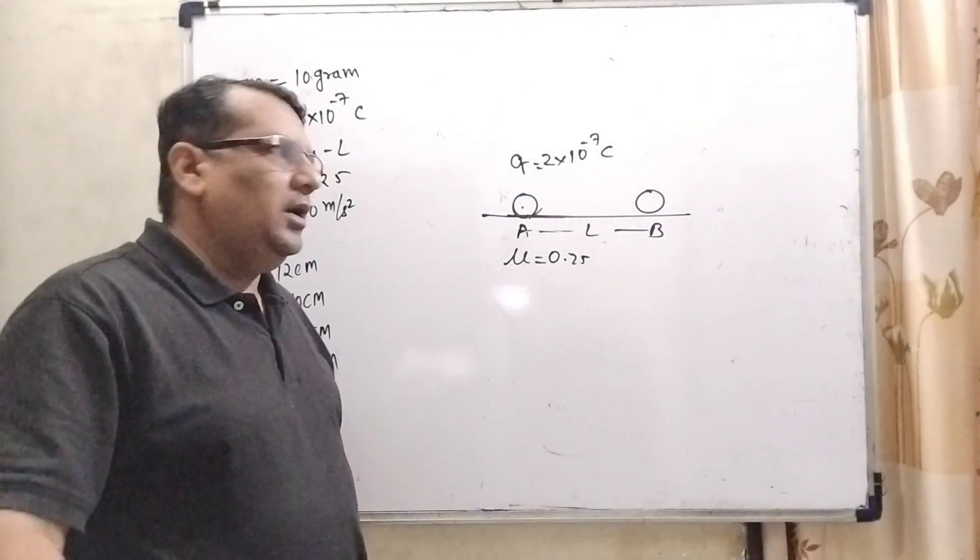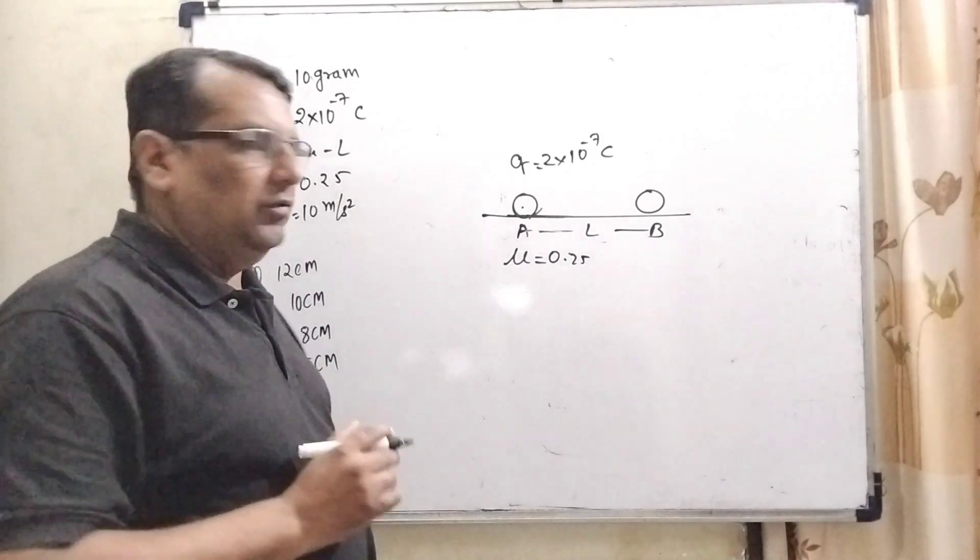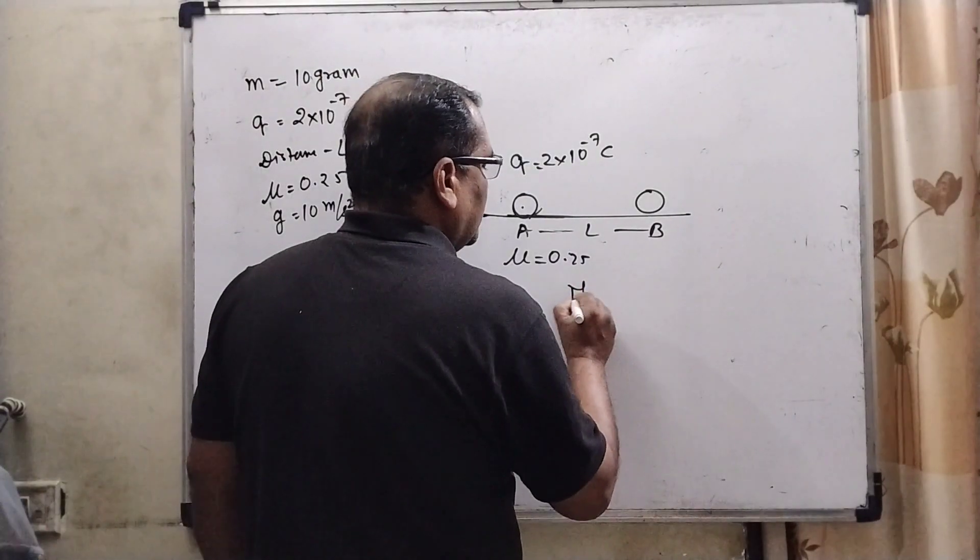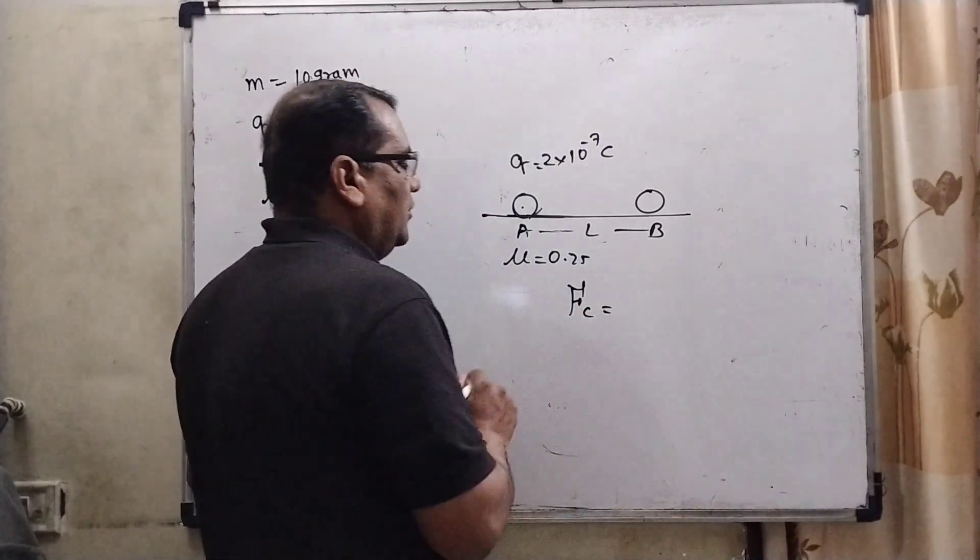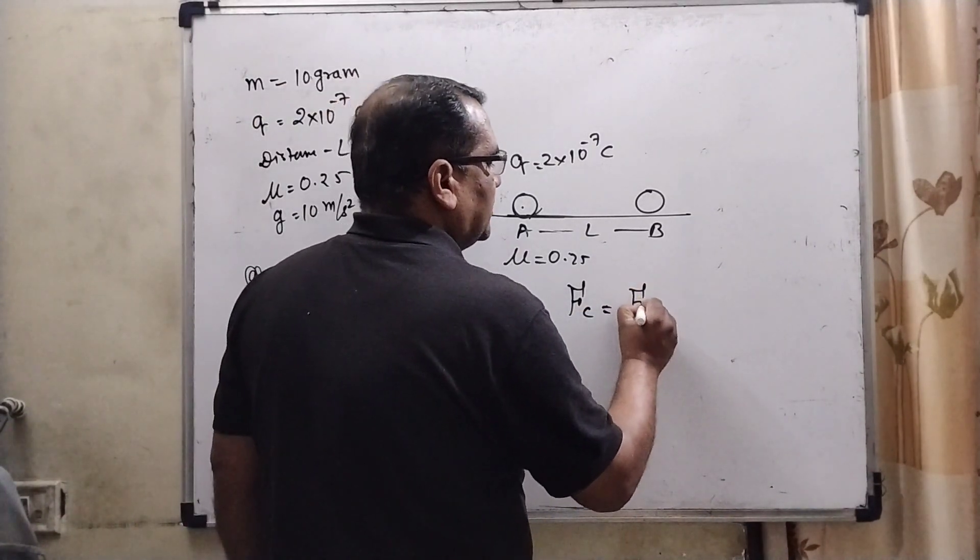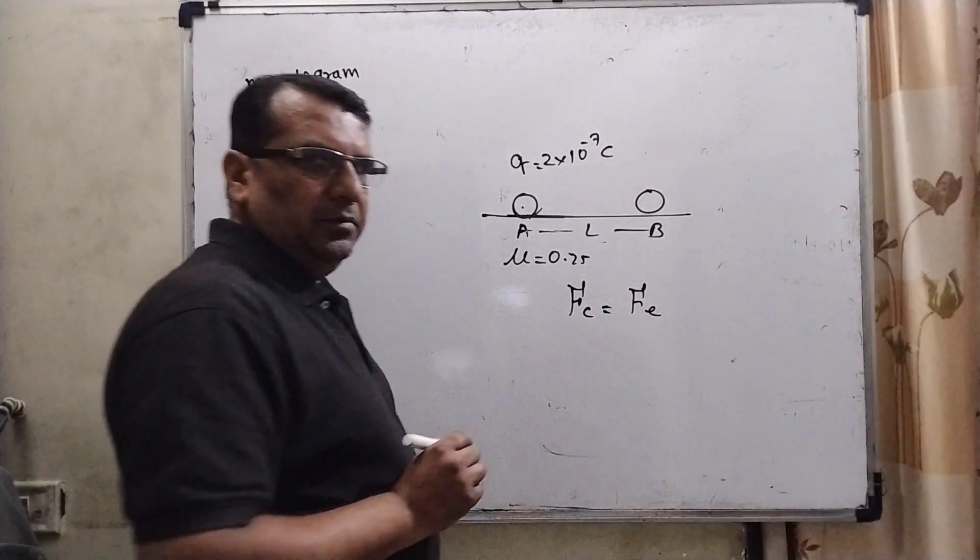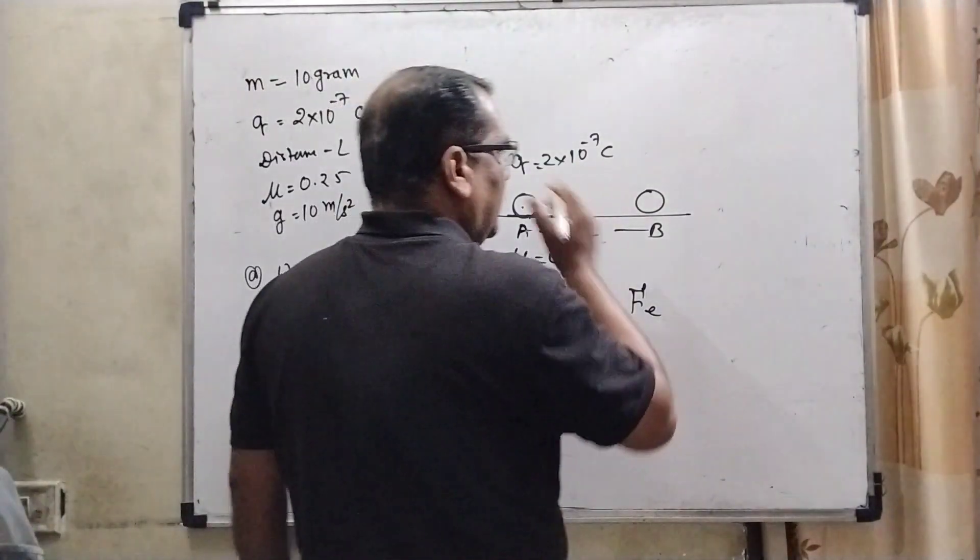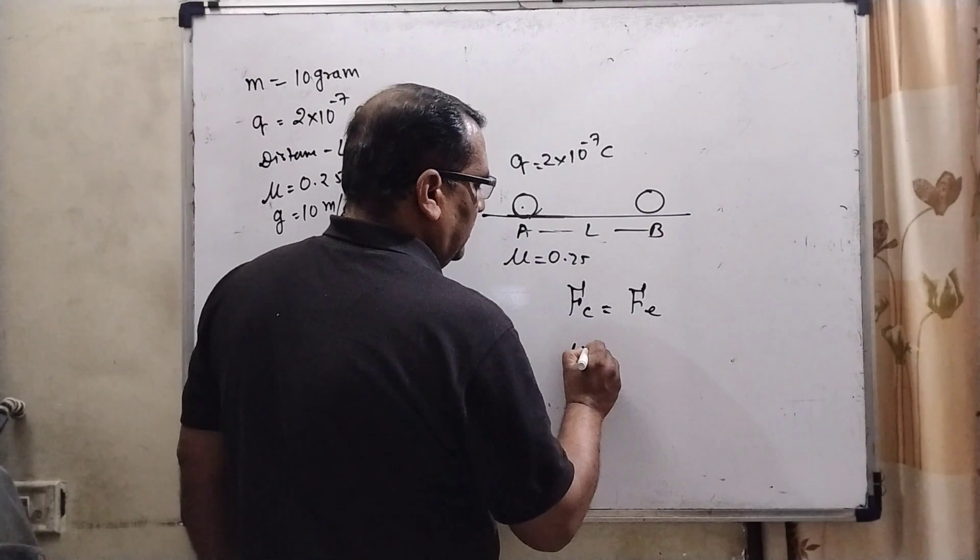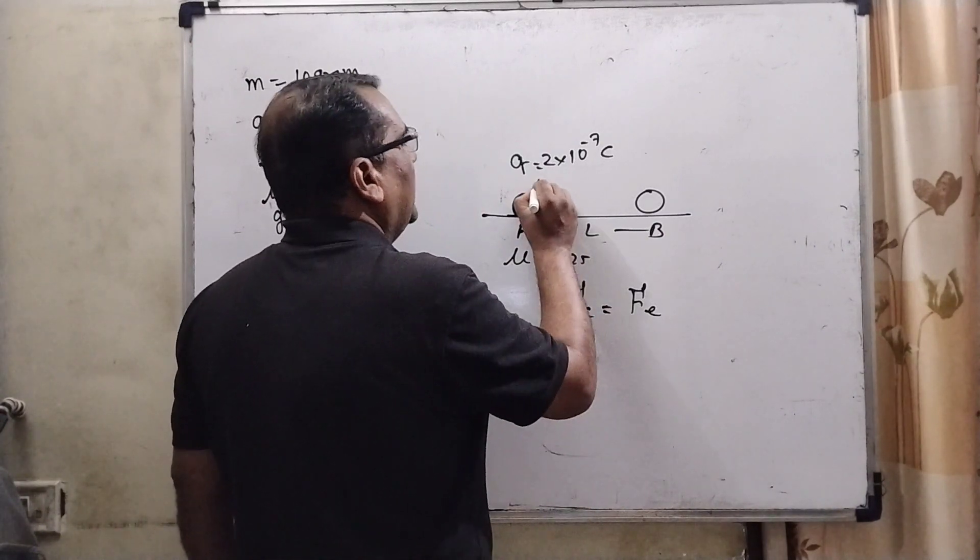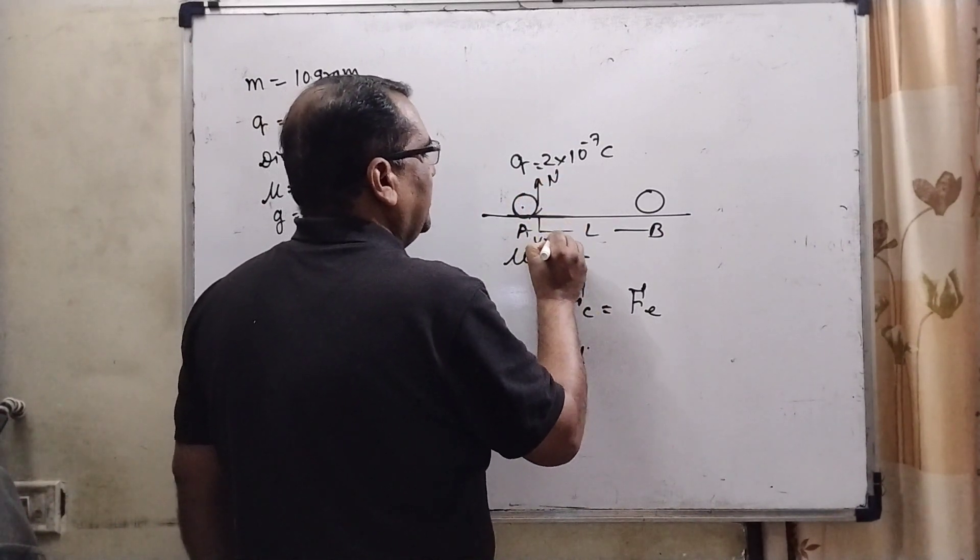When it is in equilibrium, it means frictional force and electrostatic force are equal. That is, frictional force Ff and electrostatic force Fe are equal. Here we know that frictional force = μN, where N = mg.